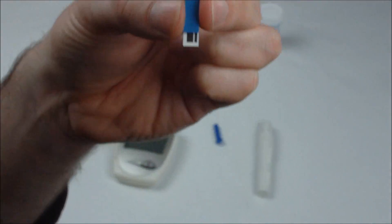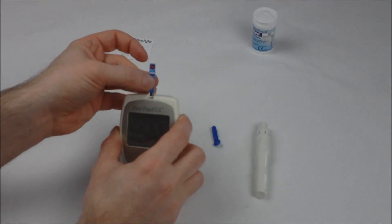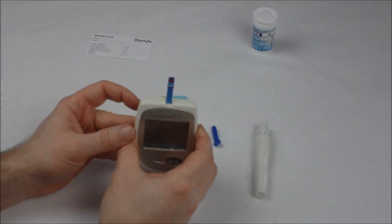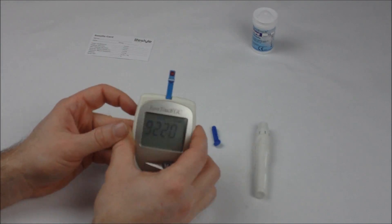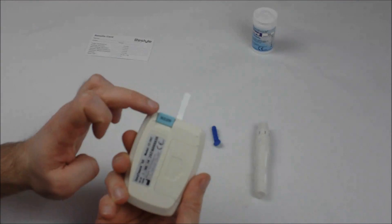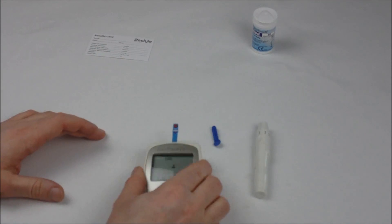Insert your test strip into the monitor in the slot at the top. It will flash a number corresponding to the code key on the back and will display the blood drop symbol.